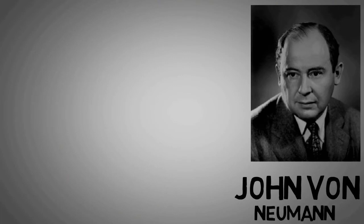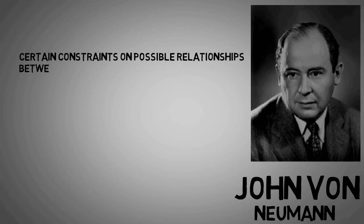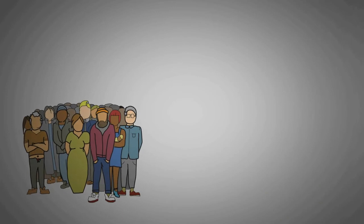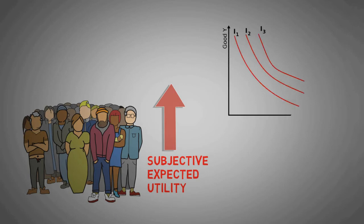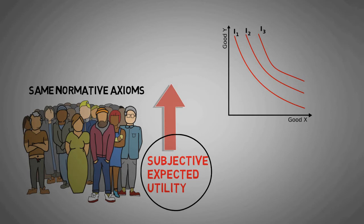Von Neumann did not define individual preference orderings but defined certain constraints on possible relationships between individual preferences. This theory says that people seek to maximize their subjective expected utility. Each person may have a different utility curve but all follow same normative axioms for achieving their individually defined maximum subjective expected utility.